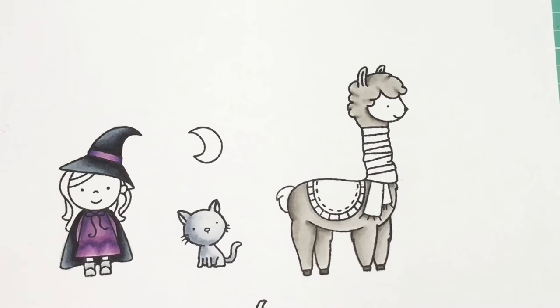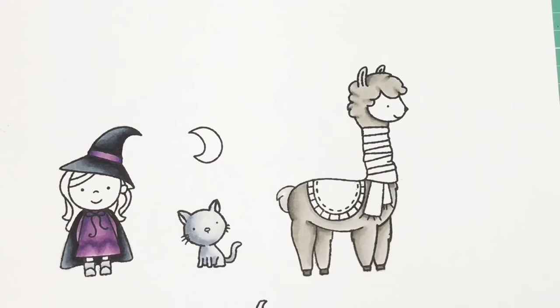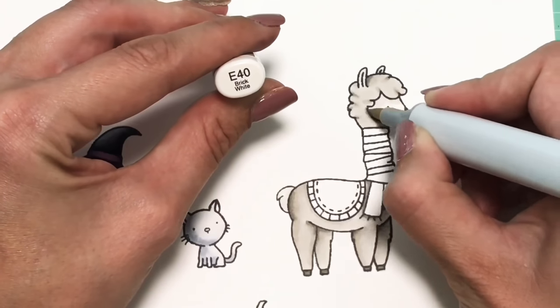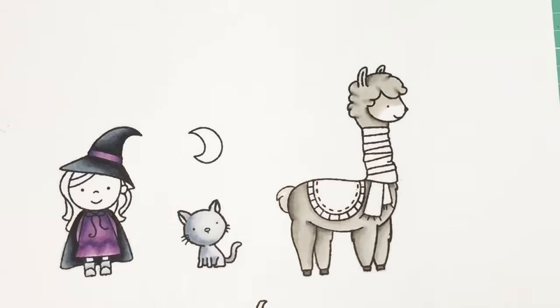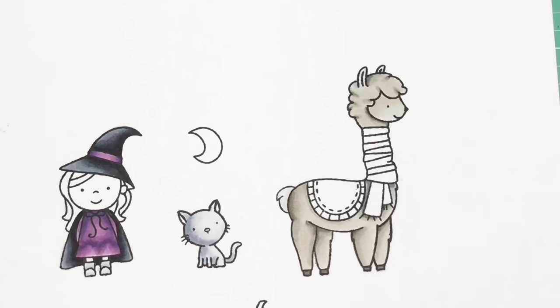But in small images, sometimes I'll just use two. It just really depends because if you use too much alcohol marker, you can easily bleed out of the line. And you really don't want that to happen. So just be wary of that. And I am using my Neenah Solar White cardstock to color these images in.